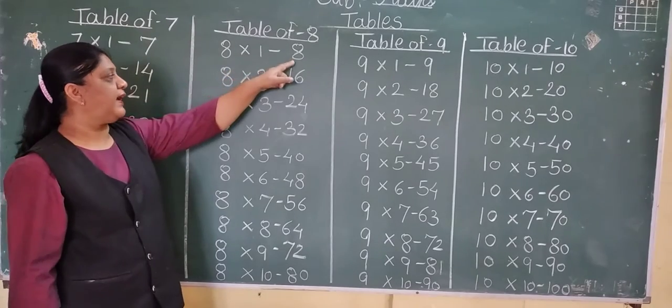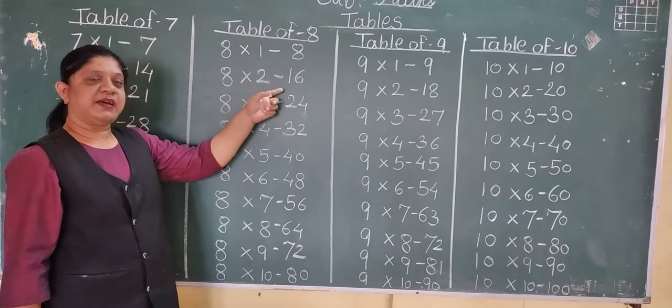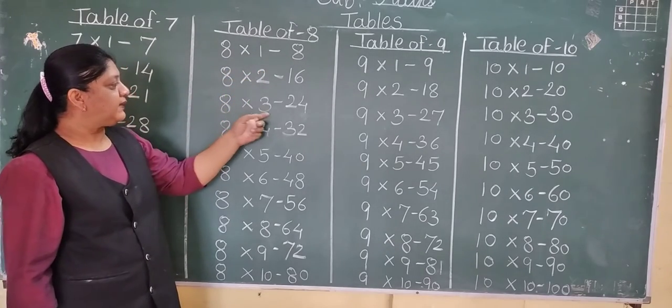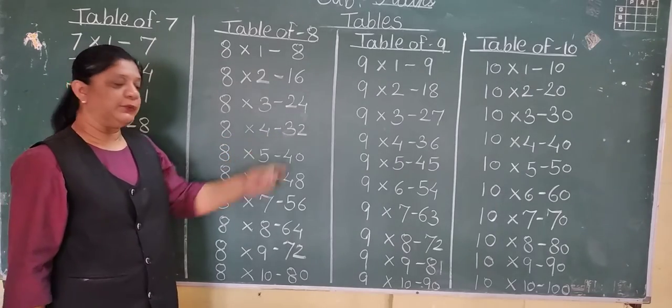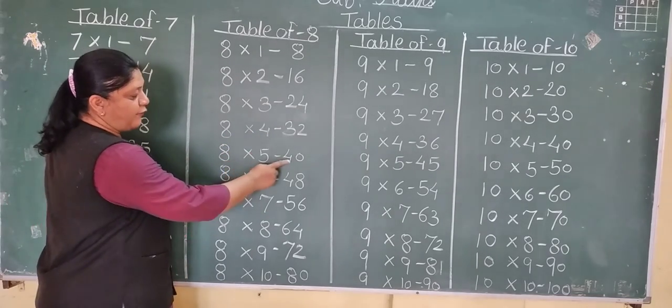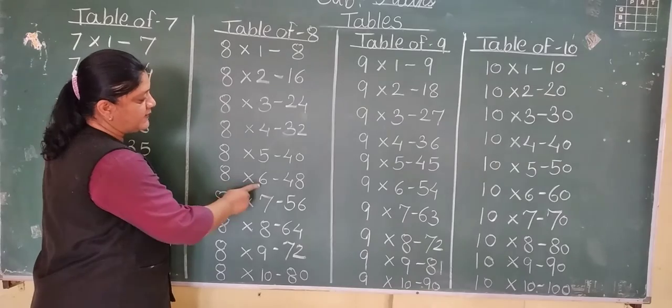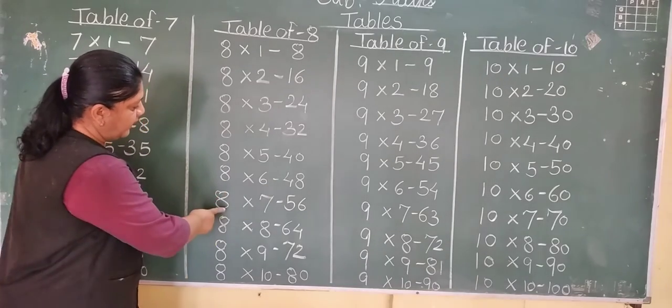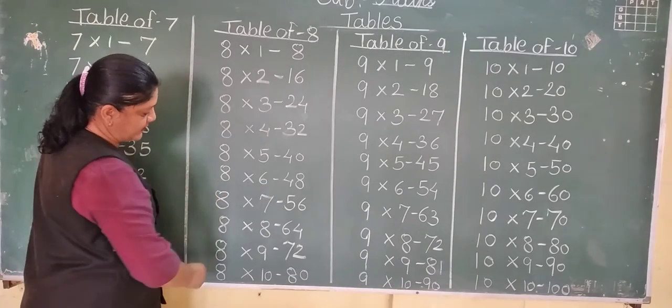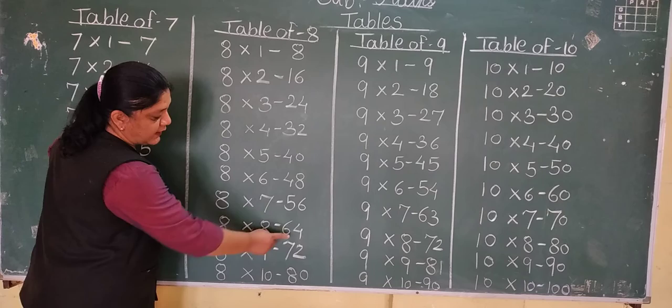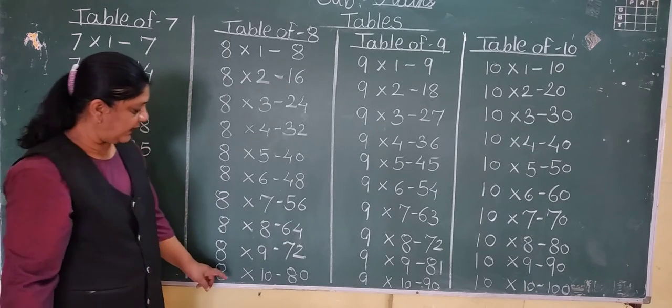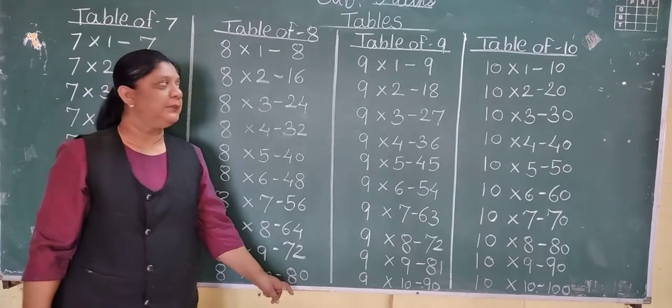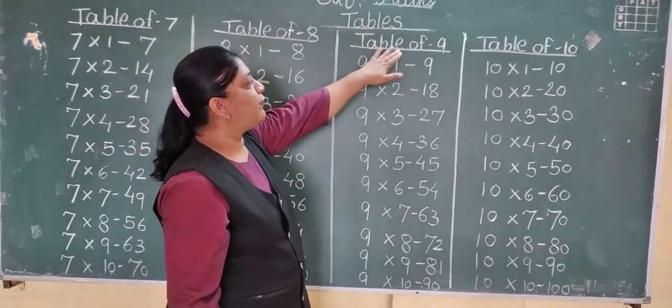8 1s are 8, 8 2s are 16, 8 3s are 24, 8 4s are 32, 8 5s are 40, 8 6s are 48, 8 7s are 56, 8 8s are 64, 8 9s are 72, and 8 10s are 80. Now table of 9.